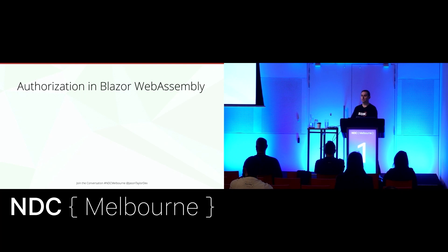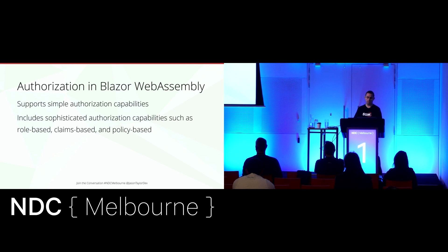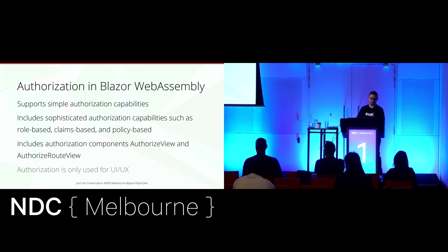Now we'll look at authorization in Blazor WebAssembly. It's important to remember that Blazor WebAssembly is an ASP.NET Core technology, so it supports many of the same authorization capabilities — simple authorization, role-based, claims-based, and policy-based — and it includes additional authorization components such as AuthorizedView and AuthorizedRouteView. The important thing is that Blazor WebAssembly runs in the client, so the authorization you place there is really only to improve the UI and user experience. It can be bypassed by disabling JavaScript or crafting an attack, so we still need to enforce authorization on the server side.